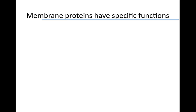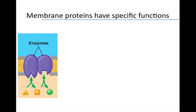Enzymes found within the plasma membrane may work as a team to carry out sequential steps and pathways. Let's observe this pathway. Notice that these two enzymes may work together to synthesize the green circle from the yellow triangle. First, the left enzyme converts the triangle into a square. Then the right enzyme takes the square and converts it into our ending product, the green circle.